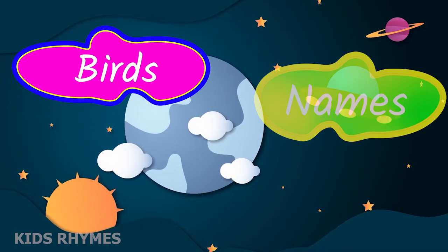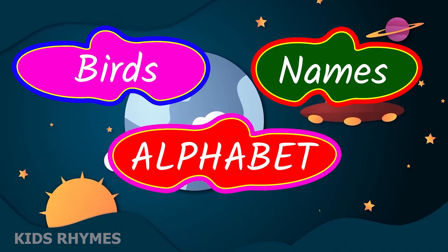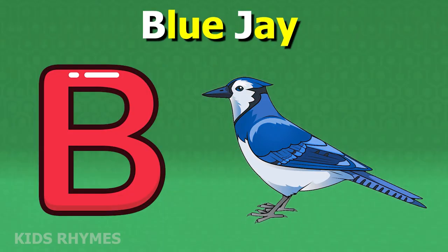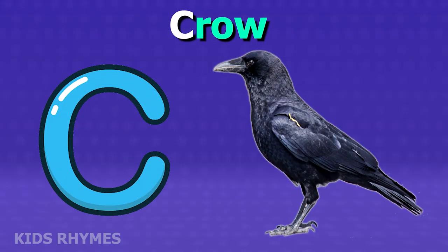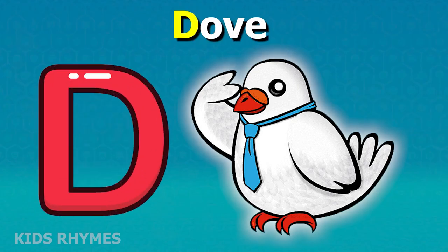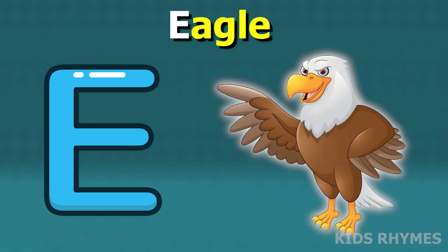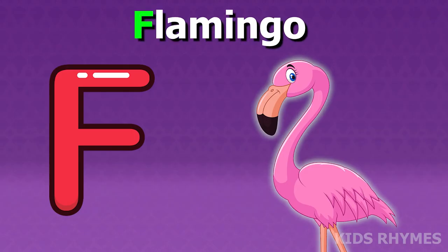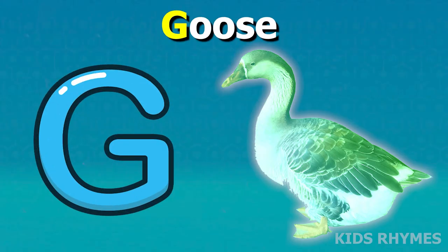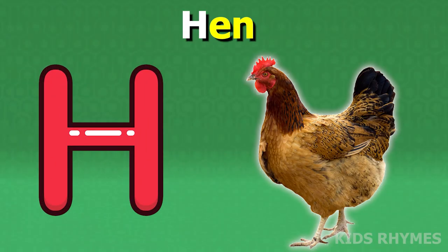Bird's name according to alphabets. A for albatross, B for blue jay, C for crow, D for dove, E for eagle, F for flamingo, G for goose, H for hen.